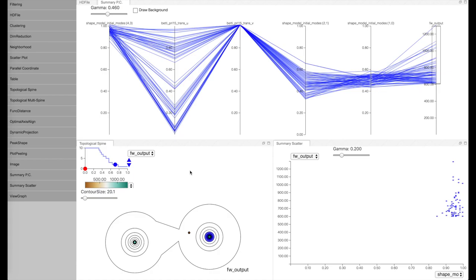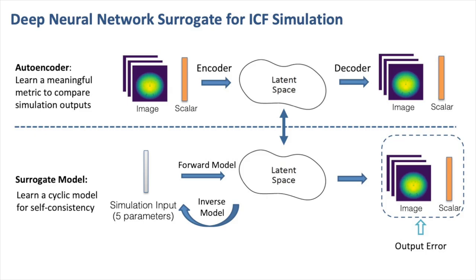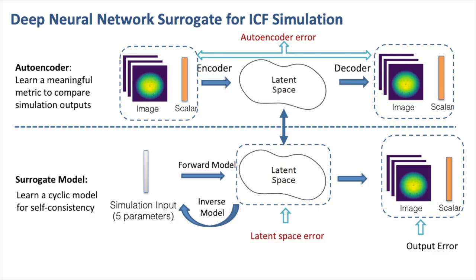Besides the output error, we can carry out similar analysis for components inside the neural network that contribute to the overall output error, such as the autoencoder errors and latent space error. The exploration allows us to better understand which error is dominant, how errors interact with each other, and what leads to the output error pattern in the first place.